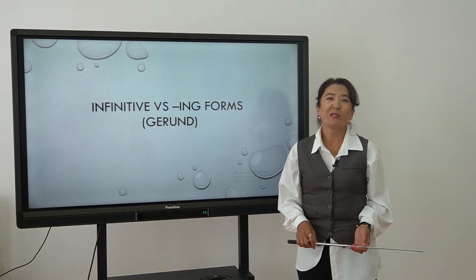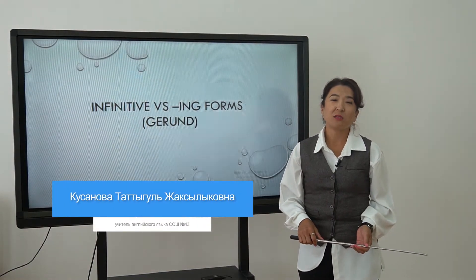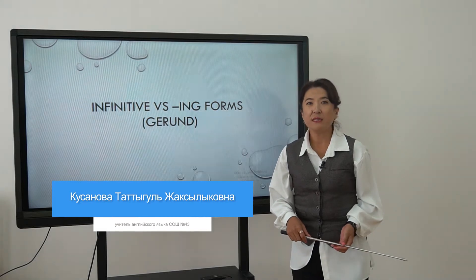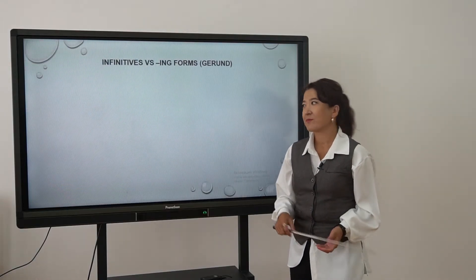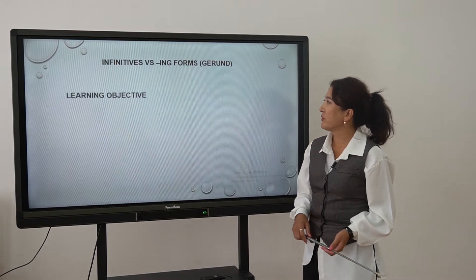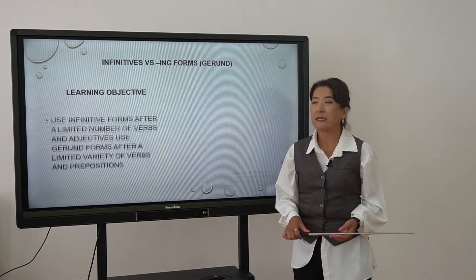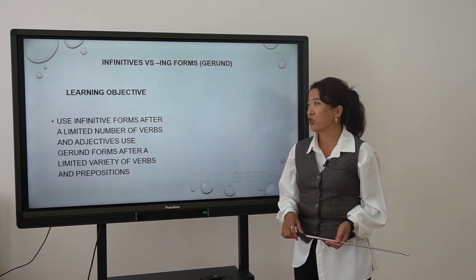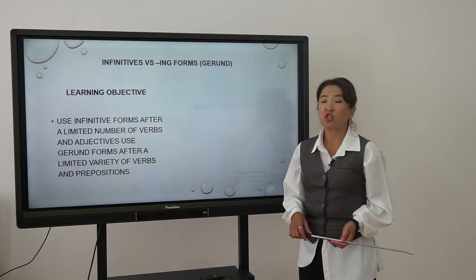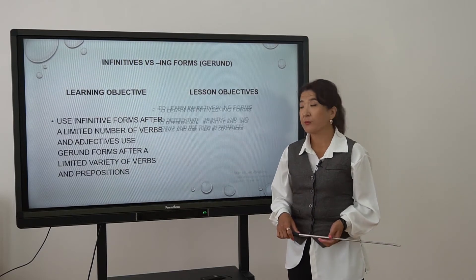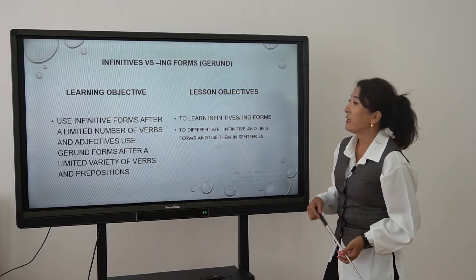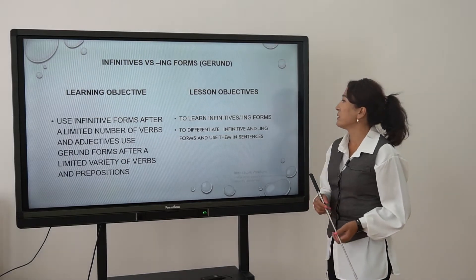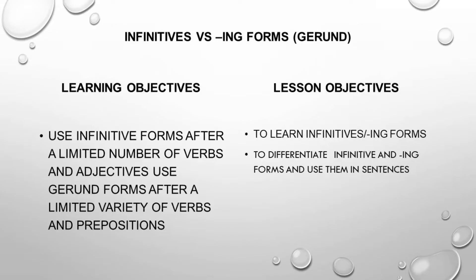Hello dear children, hope you are doing fine. Today the theme of our lesson is infinitives vs. ING forms. The learning objective of our lesson is to use the infinitive forms after a limited number of verbs and adjectives, and use gerund forms after a limited variety of verbs and prepositions. Lesson objectives are to learn infinitives and ING forms, to differentiate them, and use them in sentences.